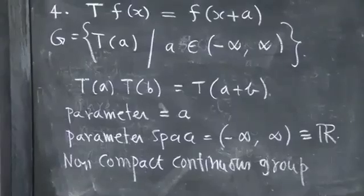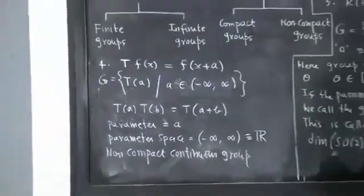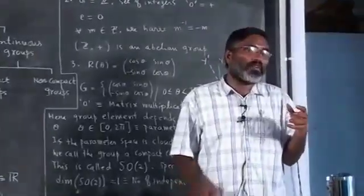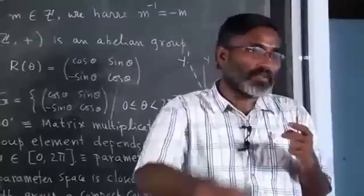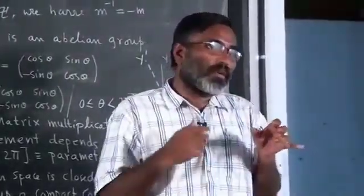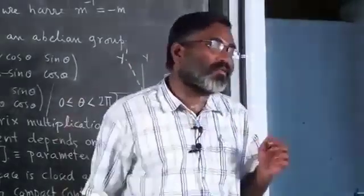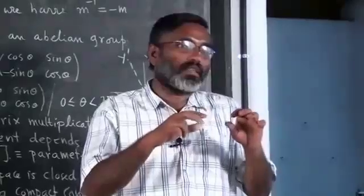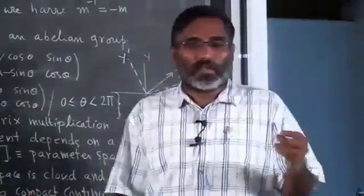All groups where we have space-time structure will come under this non-compact category. For example, the Euclidean group involves rotations and translations. The Galilean group involves rotations, translations, and boosts (velocity translations). Similarly, the Lorentz group involves rotations in four-dimensional space-time and boosts. The Poincaré group involves translations in four-dimensional space-time. So these are all non-compact groups.